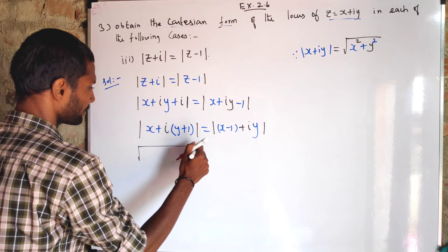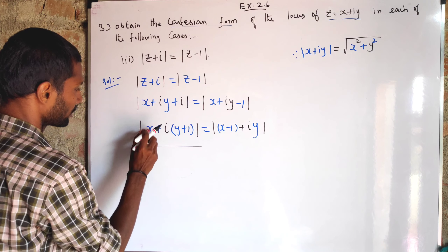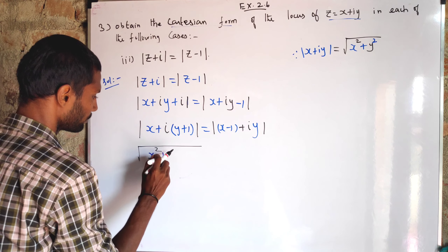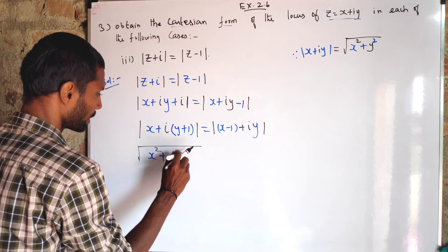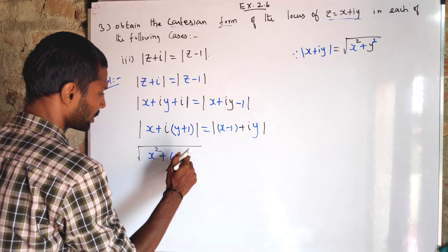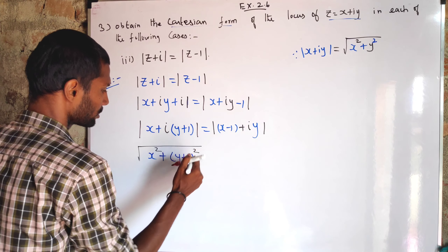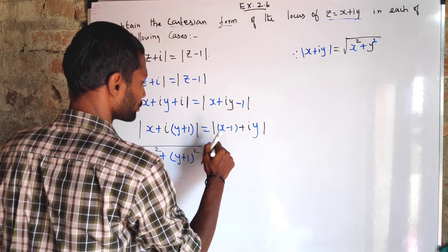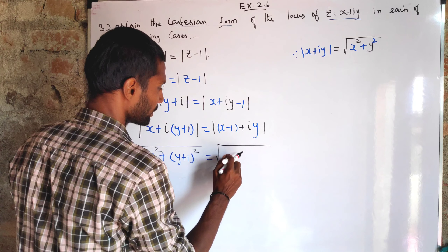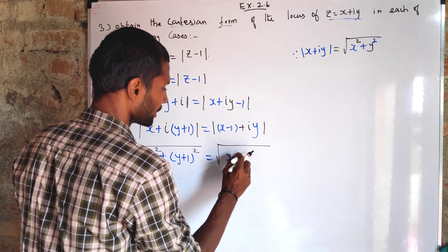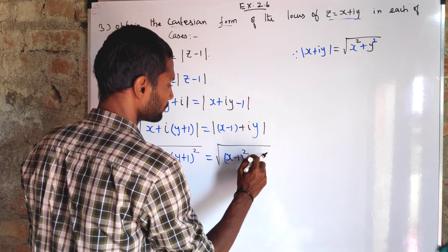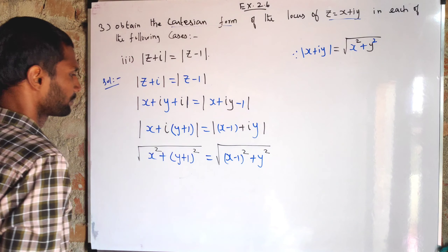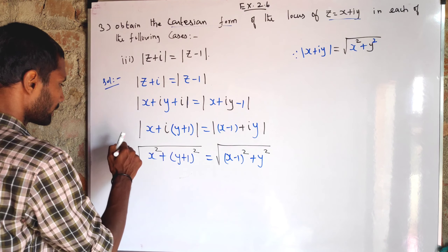Applying the modulus property: square root of x squared plus (y plus 1) whole squared, equals square root of (x minus 1) whole squared plus y squared.